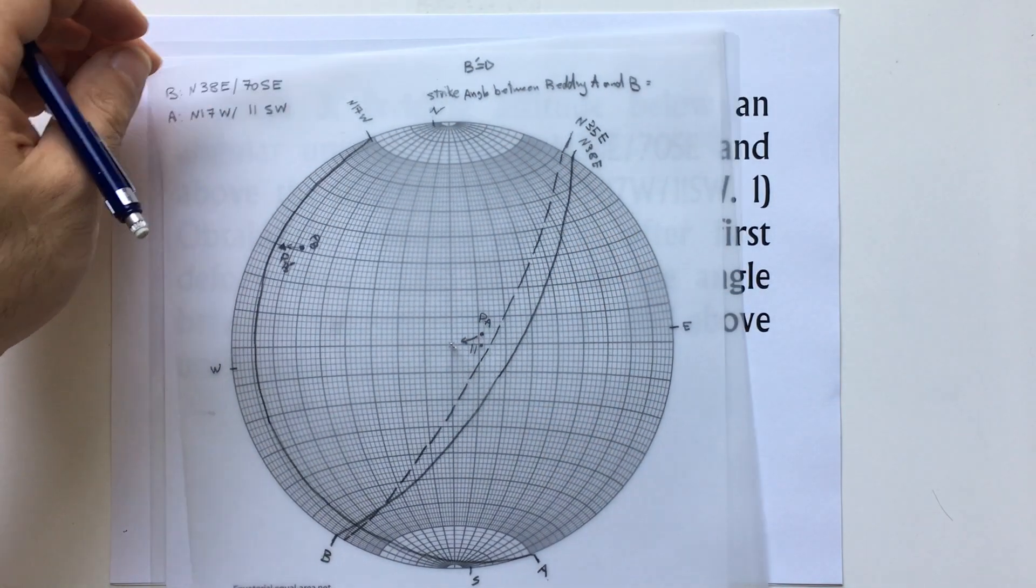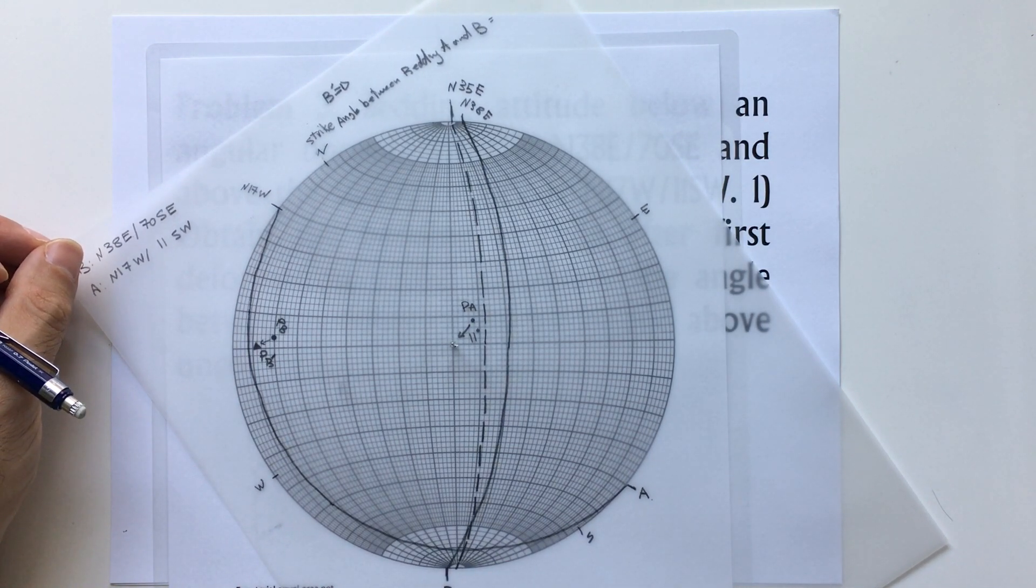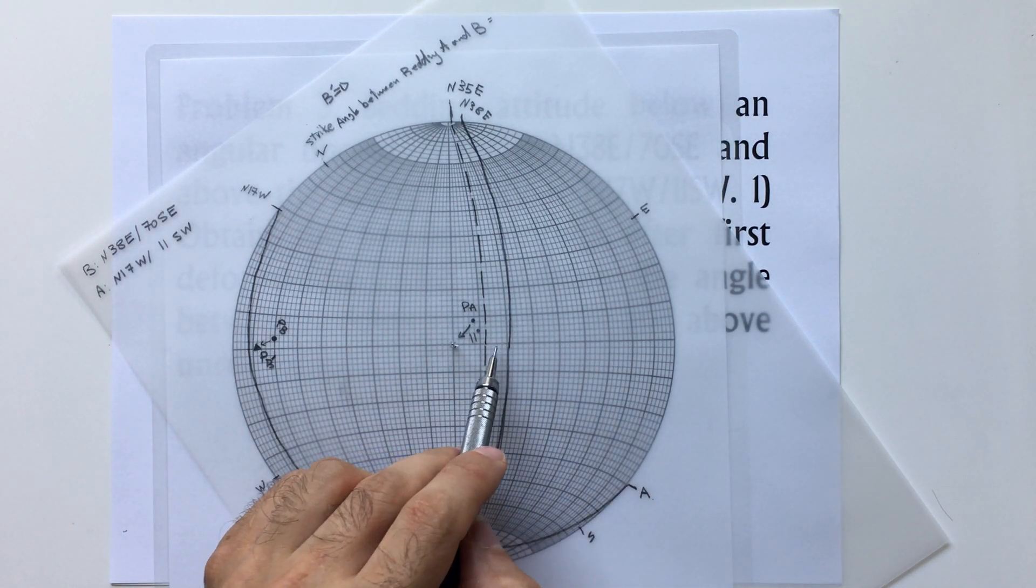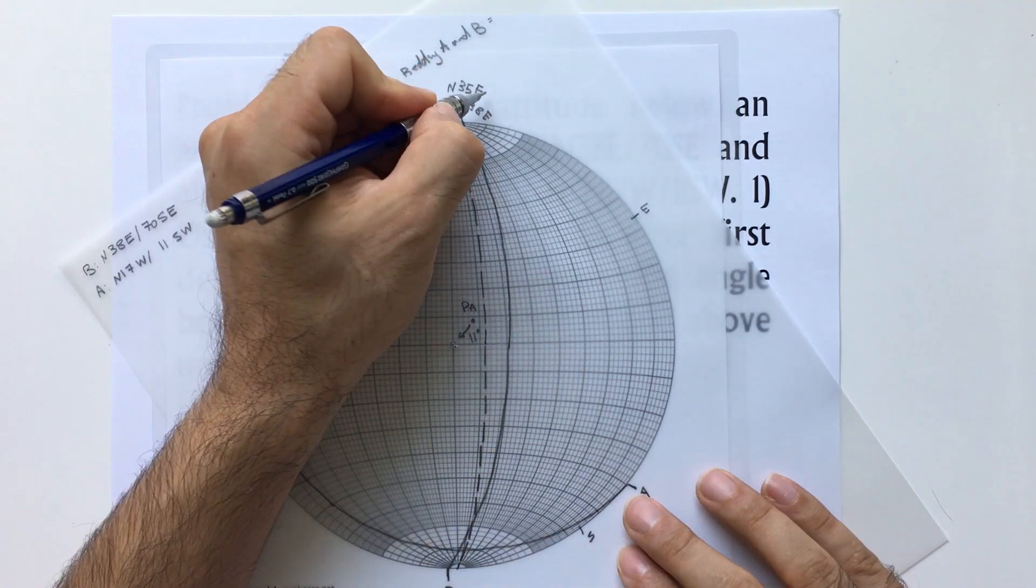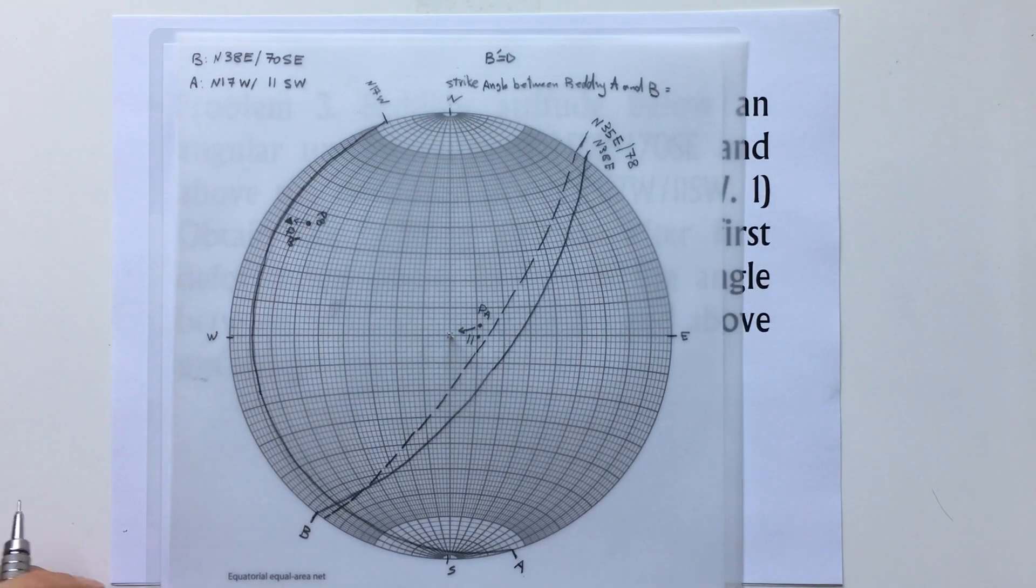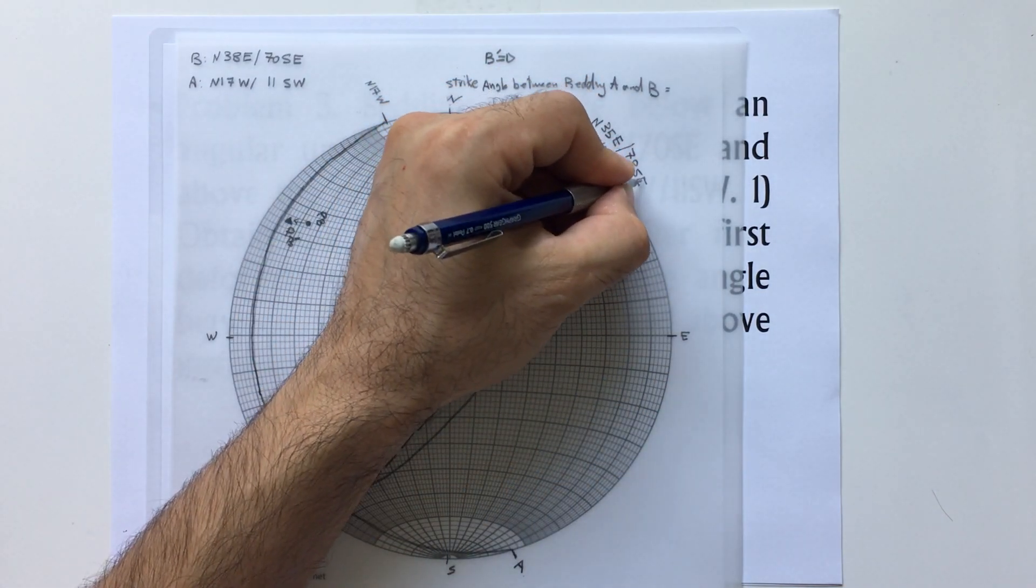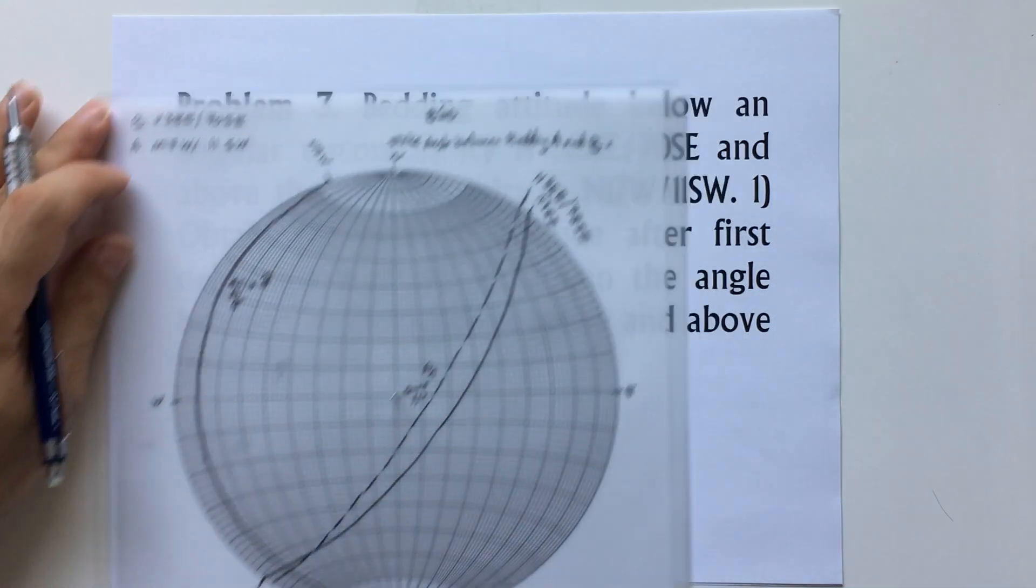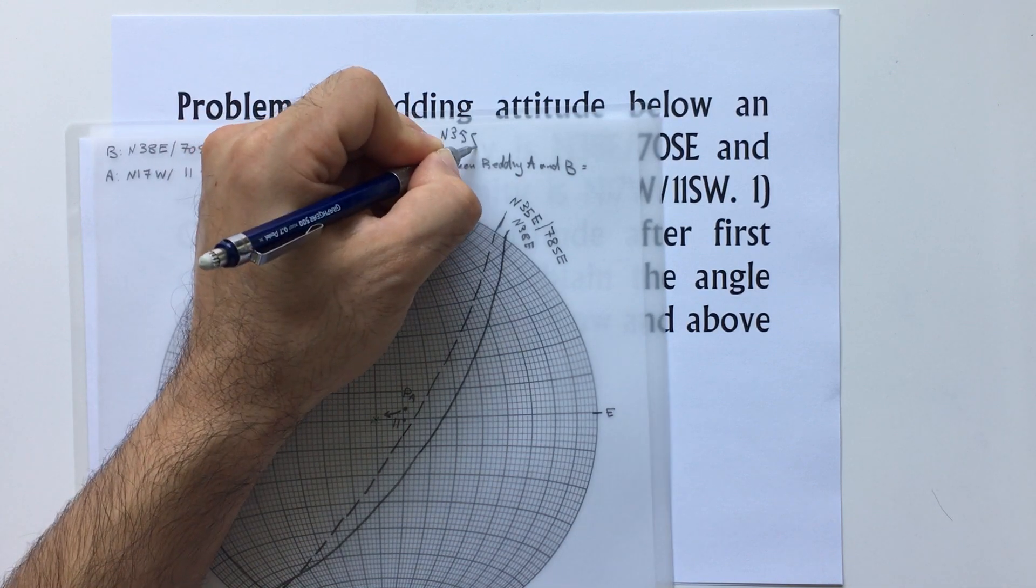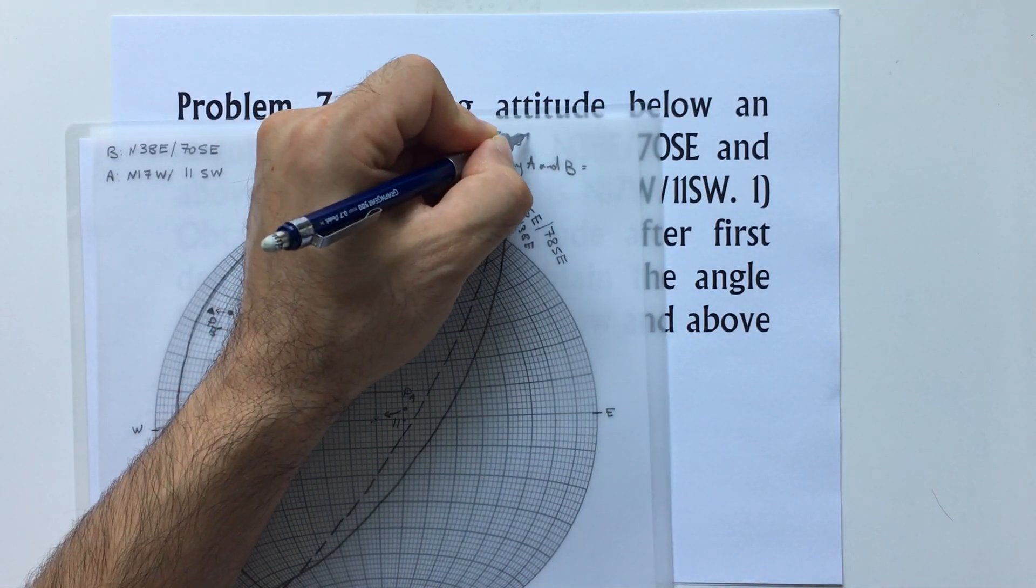And the angle, the dip is about 10, 20, 30, 40, 50, 60, 70, 78 towards southeast. So the B prime is north 35 east and it's dipping 78 degrees towards southeast.